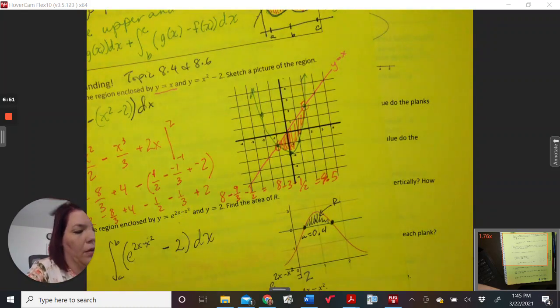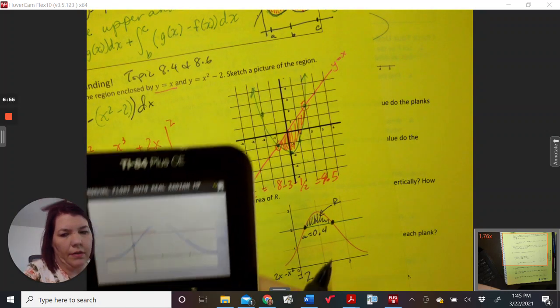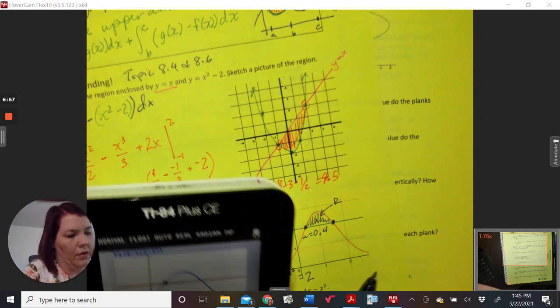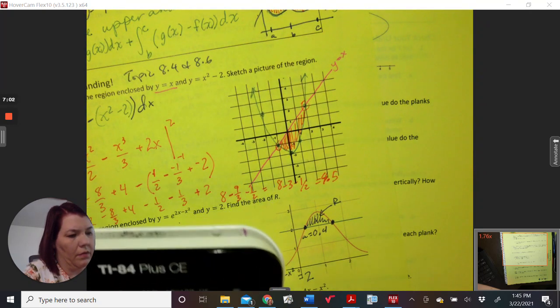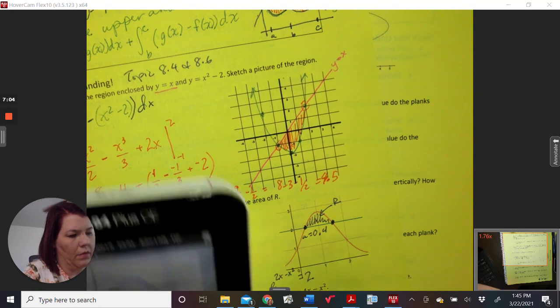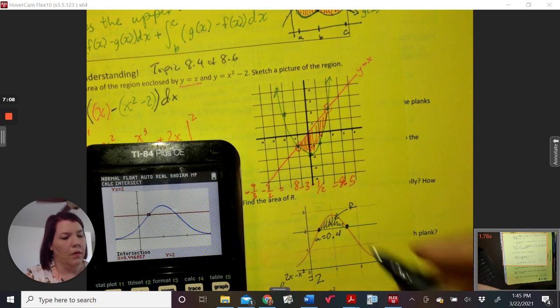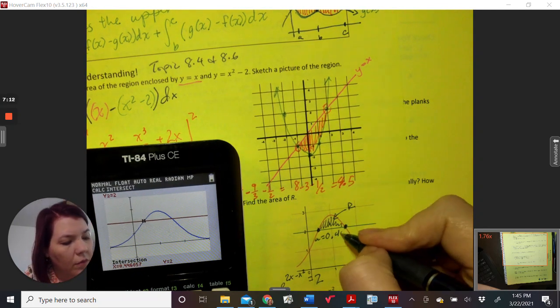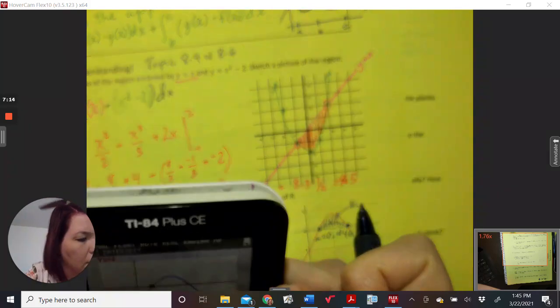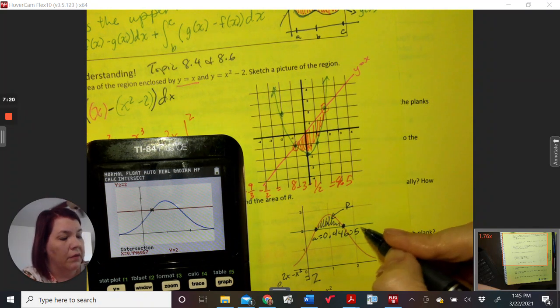So A is 0.4. Whoops. How do I get it? Let me put the whole thing down. 0.57.